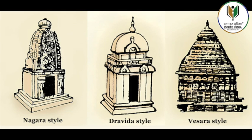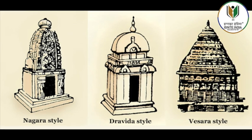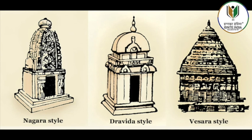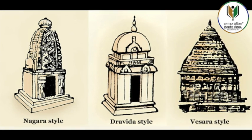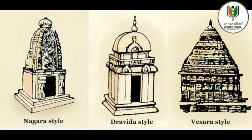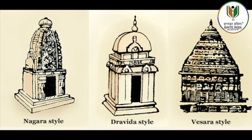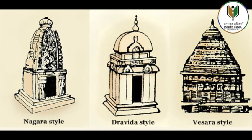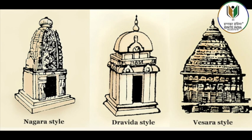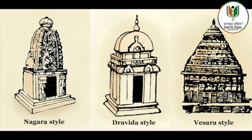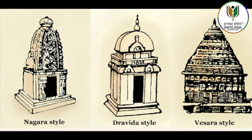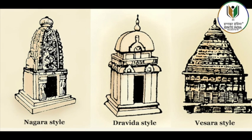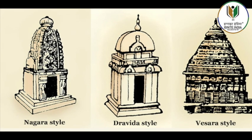The 9th century Siddhiswara Mahadev temple in Barakar in Burdwan district shows a tall curving shikara crowned by a large Amalaka and is an example of the early Pala style. The black to grey basalt and chlorite stone pillars and arched niches of Pala temples heavily influenced the earliest Bengal Sultanate buildings at Gaur and Pandua.